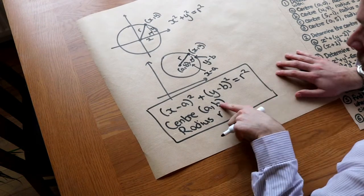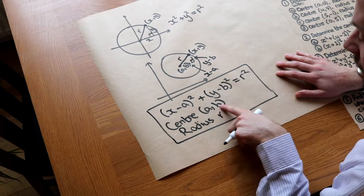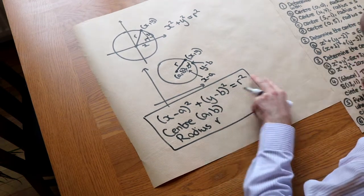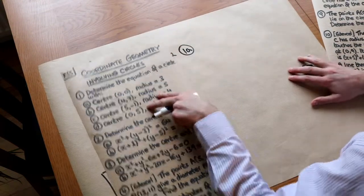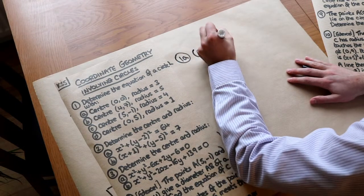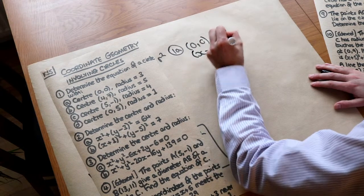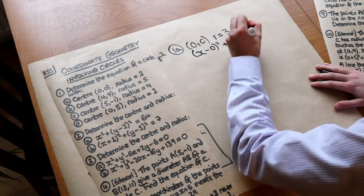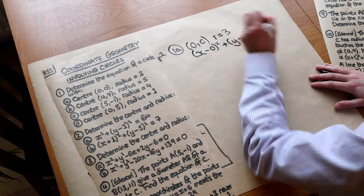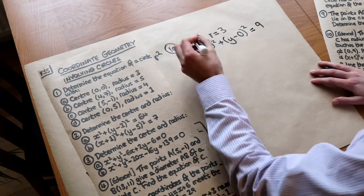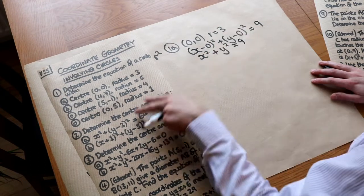Notice that if the centre were (3, 4), it would be X minus 3 and Y minus 4 — the values get negated when inserted. For Question 1a: centre (0, 0) and radius 3. Substituting gives X minus 0 squared plus Y minus 0 squared equals 3-squared, which simplifies to X-squared plus Y-squared equals 9, just as we'd write it at GCSE.